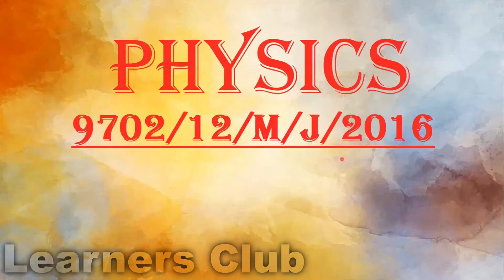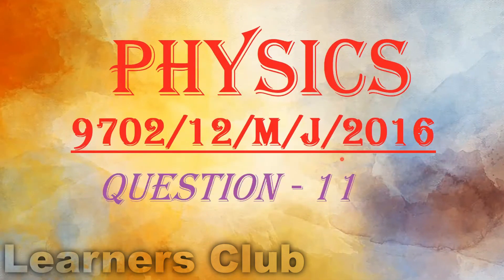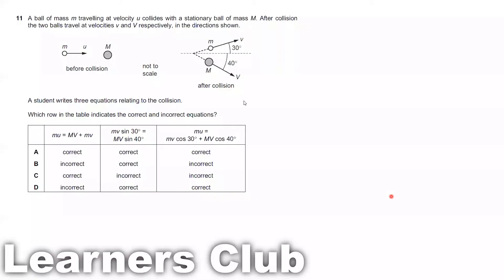Physics, May/June 2016, Paper 12, Question 11. A ball of mass M traveling at velocity U collides with a stationary ball of mass M. This ball of mass M is moving with velocity U and colliding with the other ball of mass M, which is stationary.